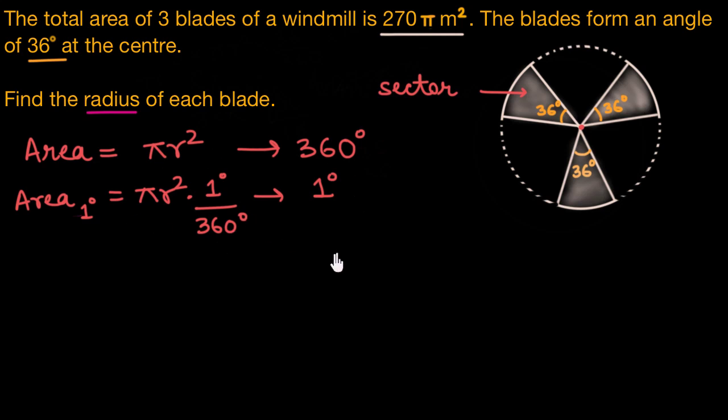This means if we have any sector which makes an angle of θ at the center, we can say that the area of this sector would be πr² times θ divided by 360°. So this gives us the area of any sector.